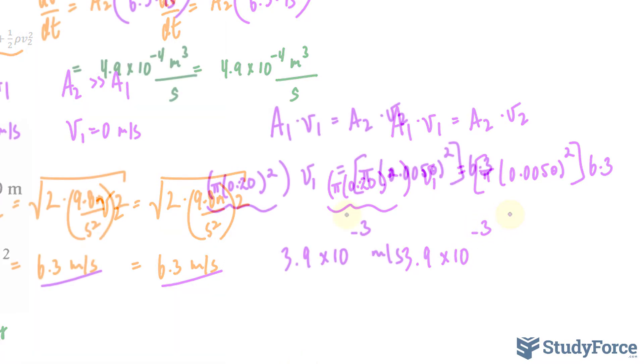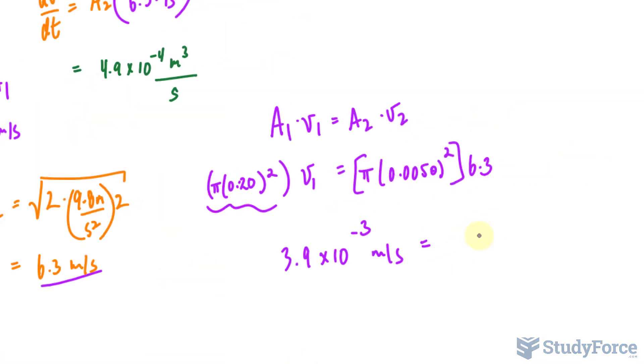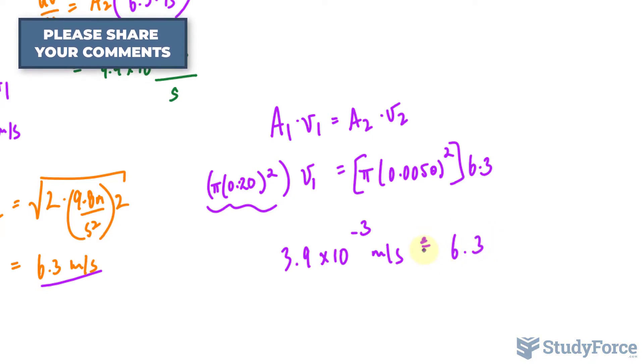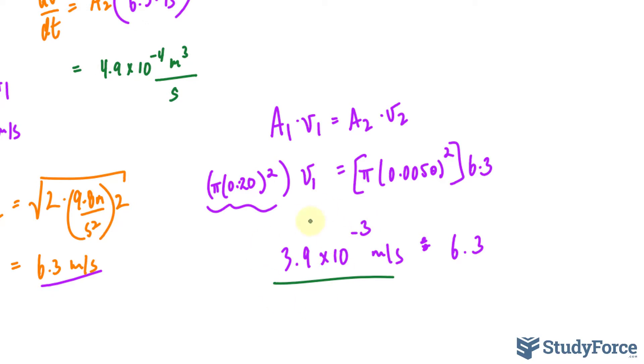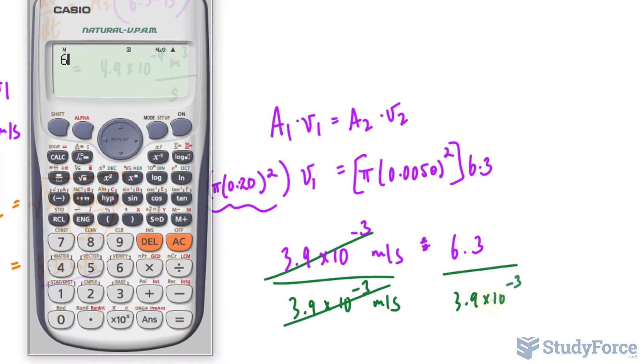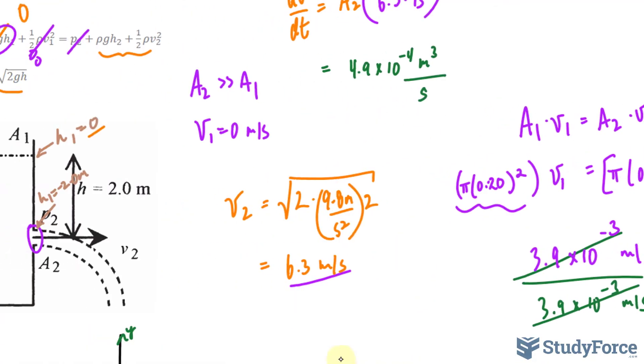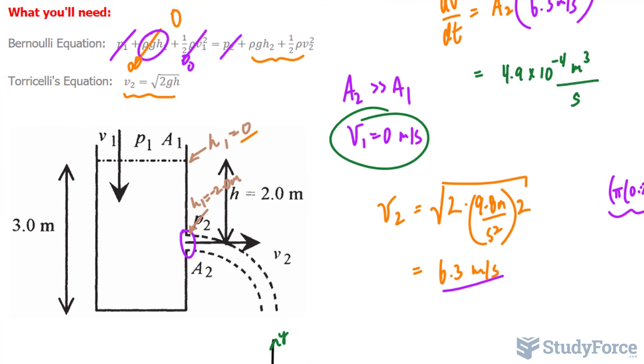So π times 0.0050² times 6.3, that's the right side of the equation, divided by this factor. π times 0.20² makes a velocity of 3.9 times 10 to the power of negative 3. To put that in perspective, if we set up a ratio and divide both sides, 6.3 divided by what we just found, the speed at which water is flowing out of that hole is 1,600 times greater than the speed at which water descends from the top. So the assumption we made at the beginning was a good one.